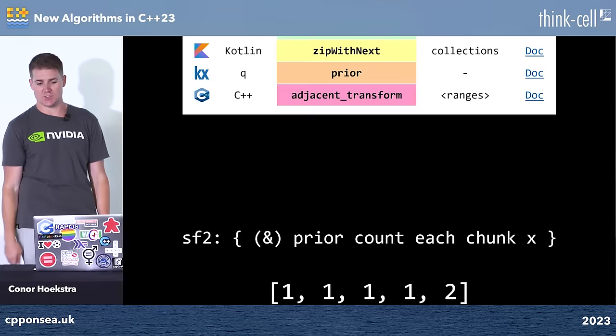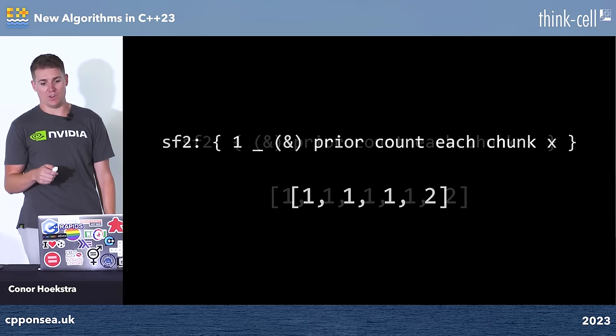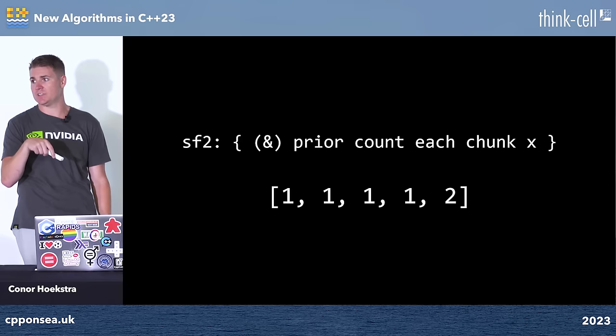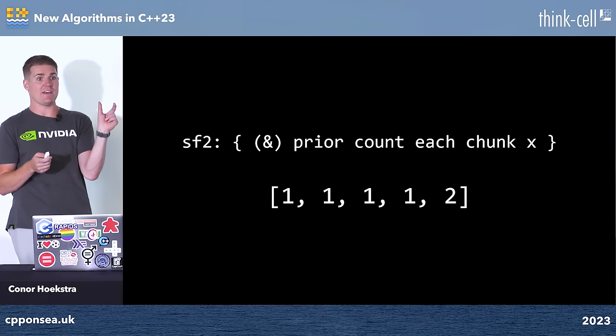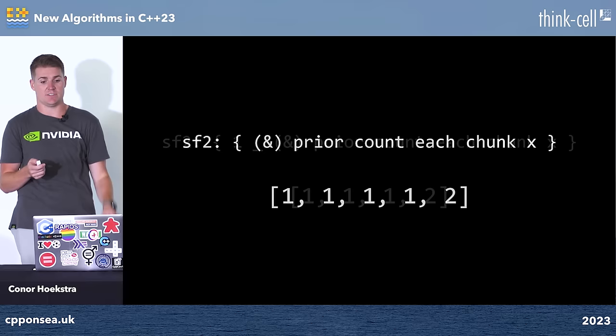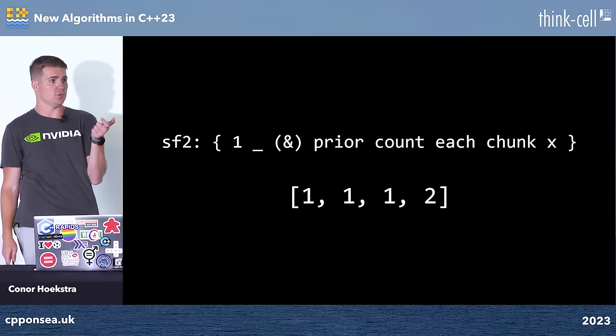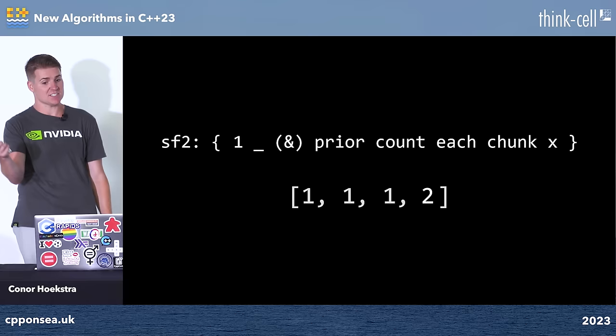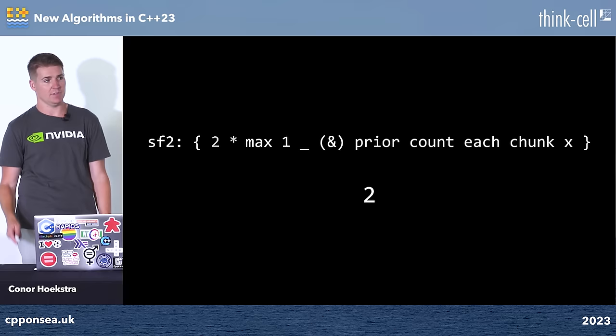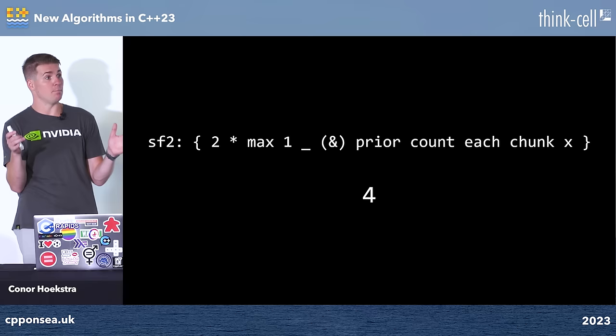One problem: 'prior' copies the first input element to the first output position (same as adjacent_difference), but we don't want that first element — it could be a large value that makes our solution incorrect. In Q, '1_' drops the first element, equivalent to views::drop(1) in C++20. After that, we just call 'max' on the result and multiply by 2, since two people are eating. That gives us the answer of 4 for the first example.